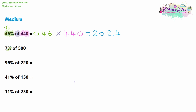Question two of the medium questions: we have 7%. Be very careful — we only have a units column with the seven. Remembering that the tens column is the first decimal place and the units column is the second decimal place, the seven goes in the units column and everything else is filled with zeros. Then we have 'of', which means multiply, and we have 500. So type 0.07 multiplied by 500 — you should get 35 as the answer.